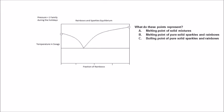Let's try a couple of multiple-choice questions. First, what do these points represent? It's a B, right? Actually, yes. At these points, we have pure solid sparkles and pure solid rainbows as indicated by the x-axis. Therefore, these must be their normal melting points.